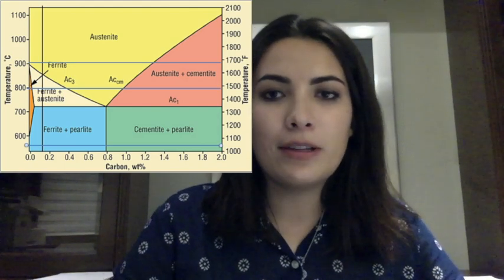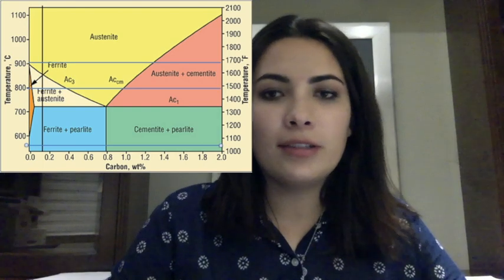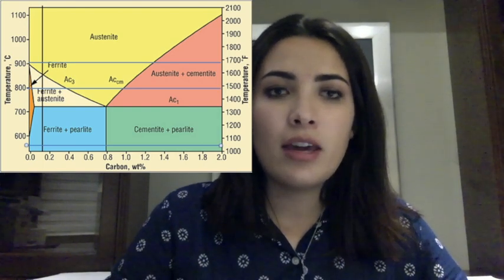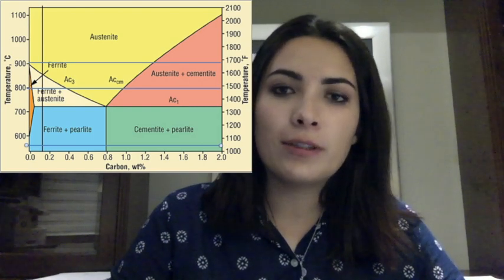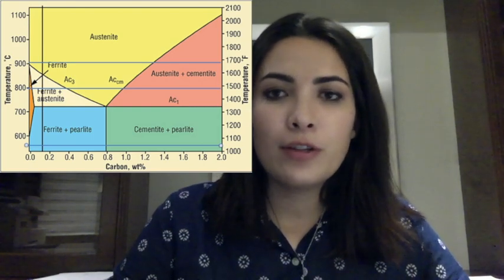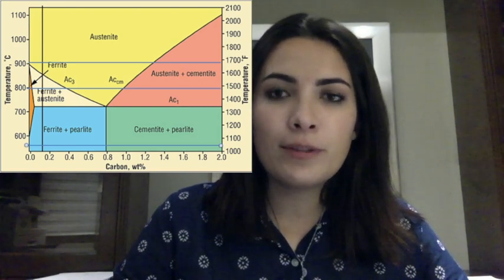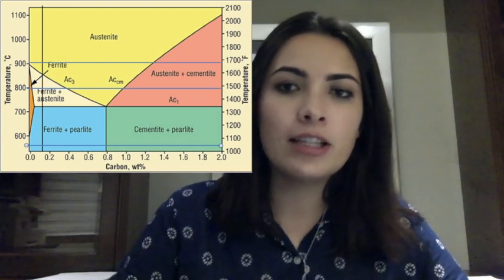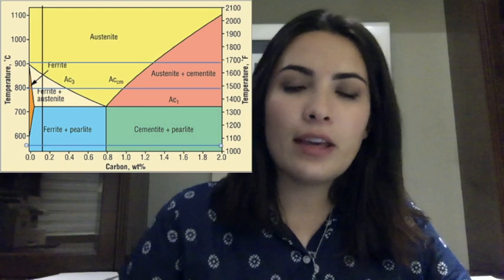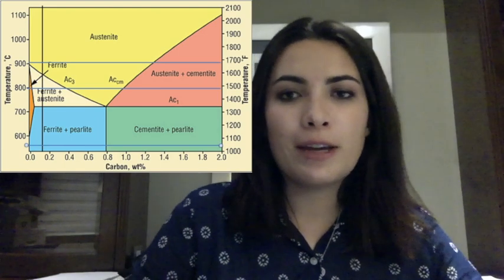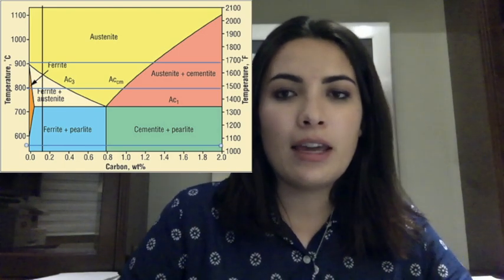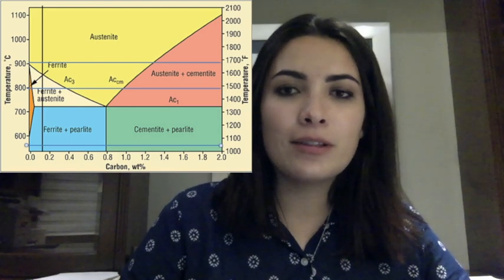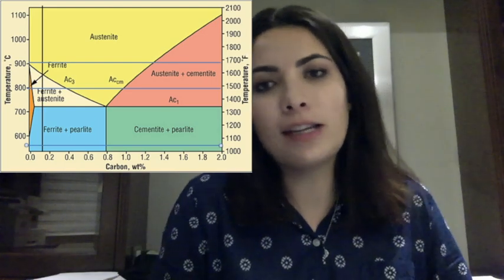We started the same for all three pieces — at room temperature, about 25 degrees, in the ferrite plus pearlite phase. We raised the temperature to about 900 degrees in the oven, reaching the austenite phase, then dropped the temperature by quenching all three pieces in water to about 50 degrees, returning to the ferrite plus pearlite area.